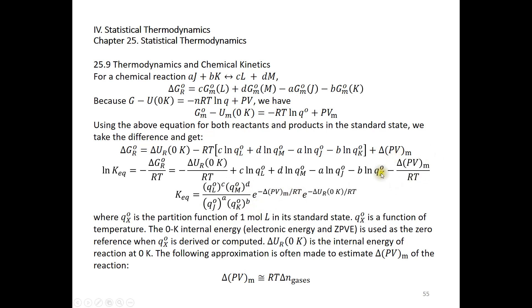For the PV term, we have e to the power of negative delta PV sub M over RT, meaning per mole reaction. And for the energy term, we have e to the power of negative delta U of reaction at 0K over RT. Although we see '0K' here, T can be any temperature — the 0K label means we take the 0K internal energy for the products minus that of the reactants.